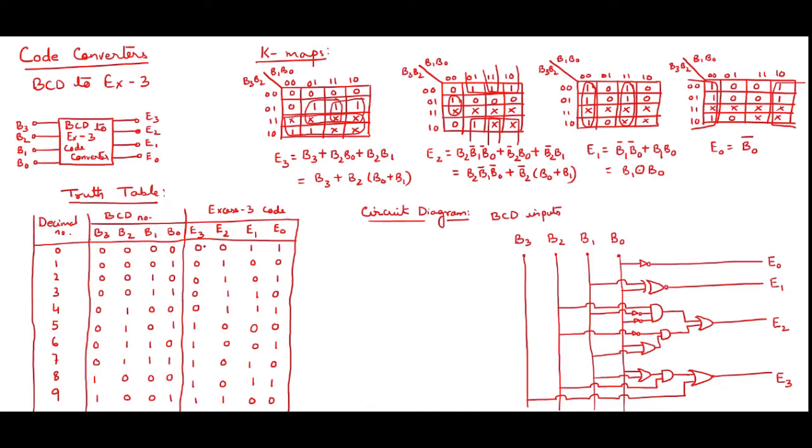So what I have done is that I have taken 0 till 9, whatever value for E3 is there, I have plotted over here. And from 9 to 15, I have taken don't care. Similarly, for E2, E1 and E0. Then you see, I have done the grouping over here.